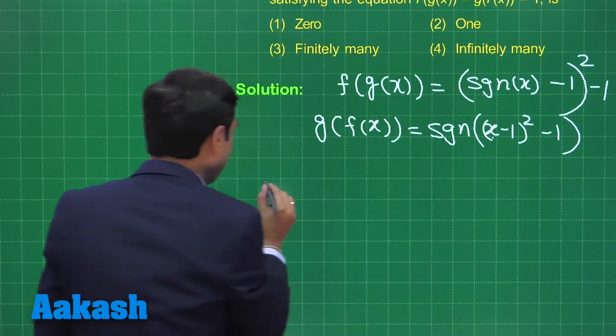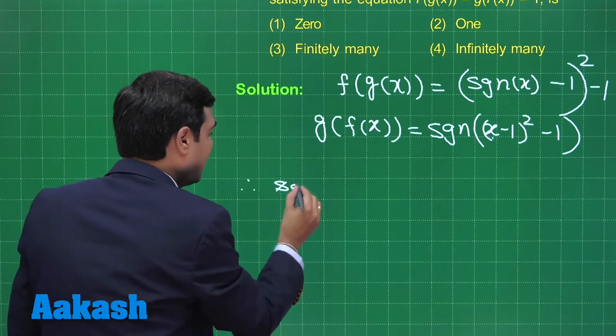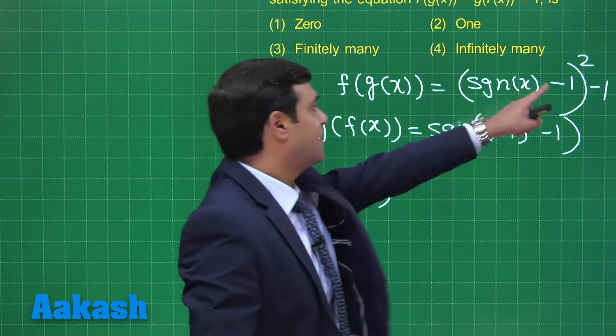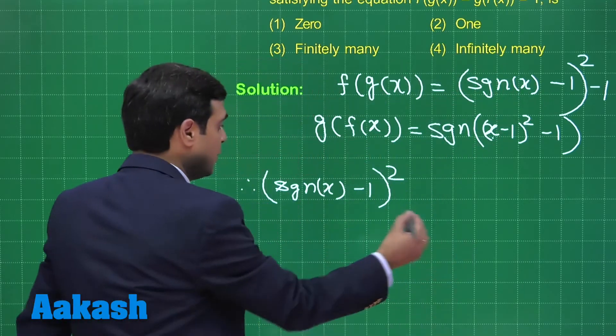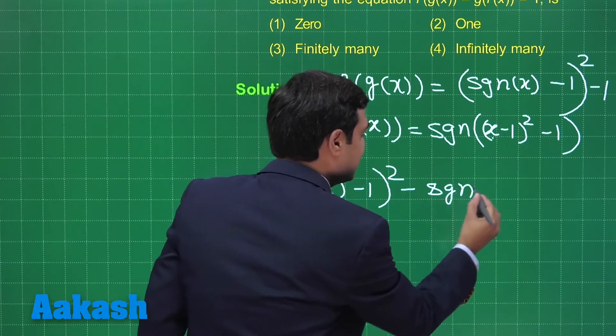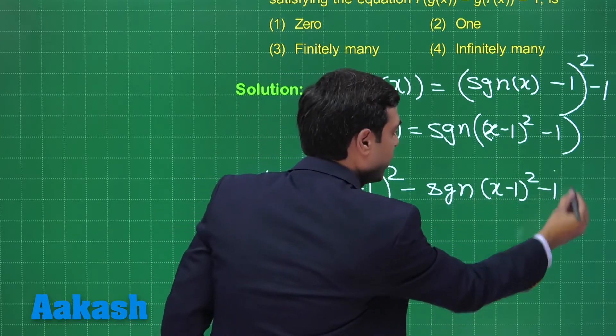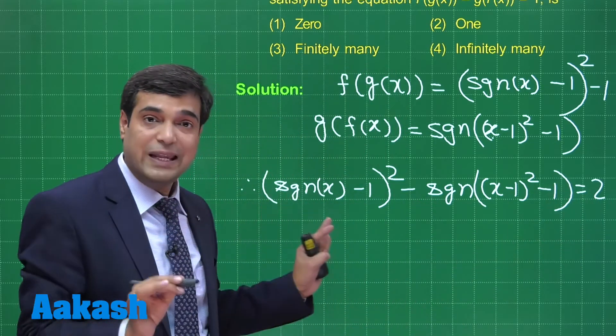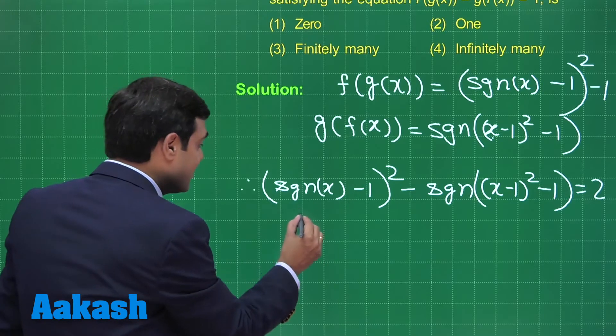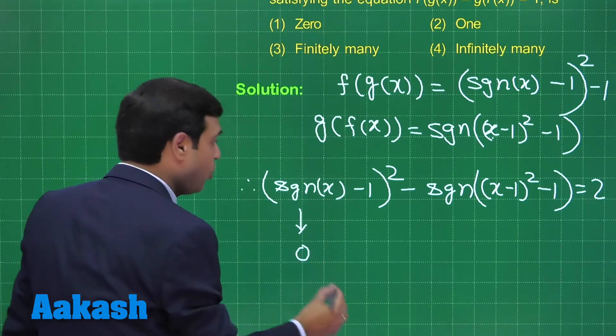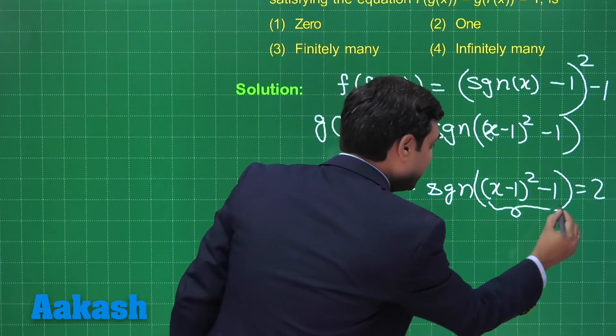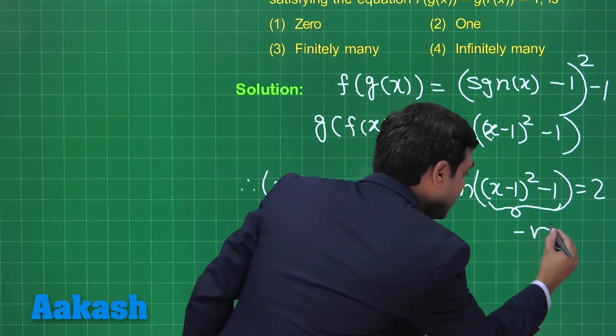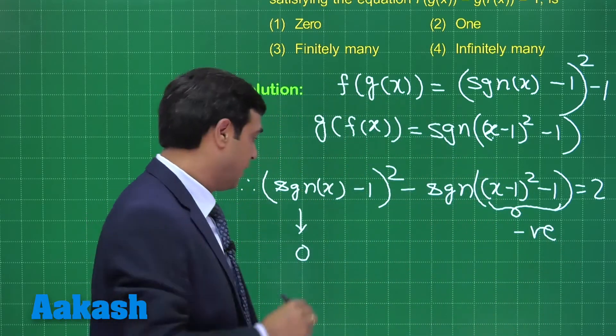On subtracting the two, what we are getting? Therefore, signum[(x - 1)²] - let's take this minus one on the right-hand side - so here you have minus signum[(x - 1)² - 1] is equal to two. Now this is possible only if you consider that simultaneously this signum x is zero, and this entire term after this signum, that is (x - 1)² - 1, is negative, so that signum of something will become minus one.